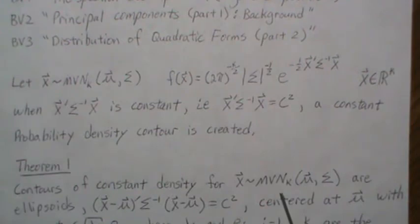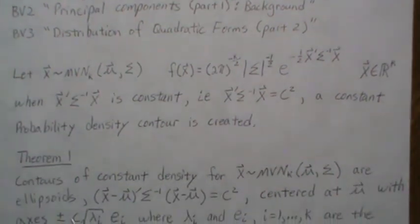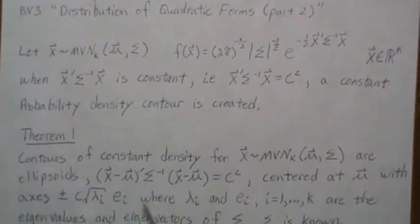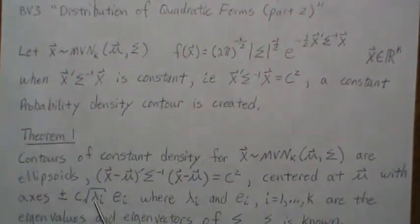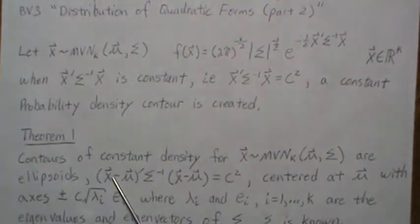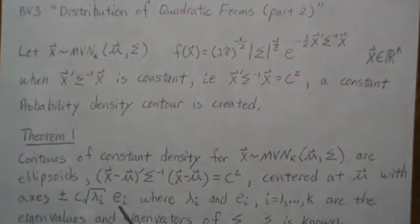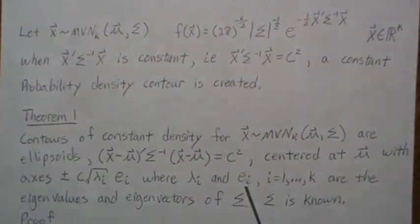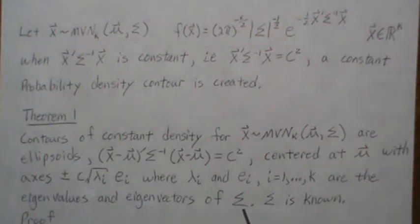Theorem one states that the contours of constant density for a multivariate normal are ellipsoids. The ellipsoid is centered at the mean vector, and the axes have lengths determined by the eigenvalues and eigenvectors of sigma. In two dimensions, eigenvector e_i points along one axis and its negative points in the opposite direction; with k dimensions there are k axes.